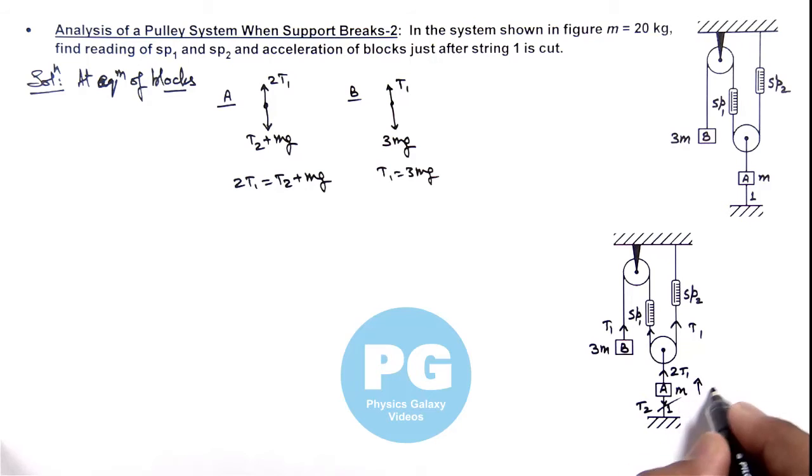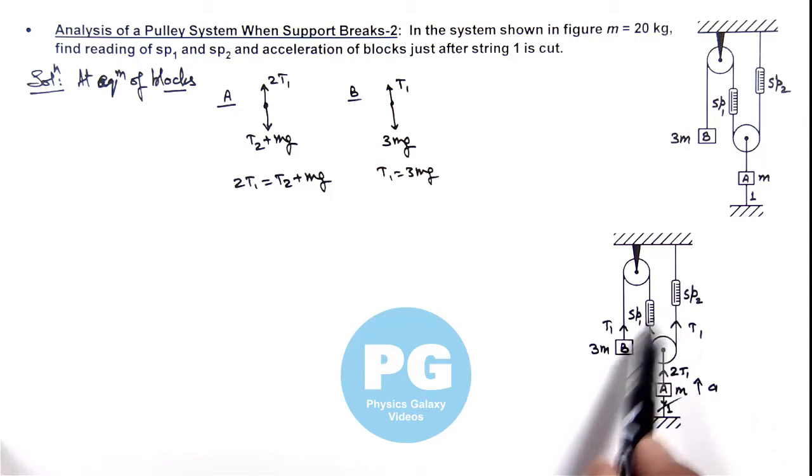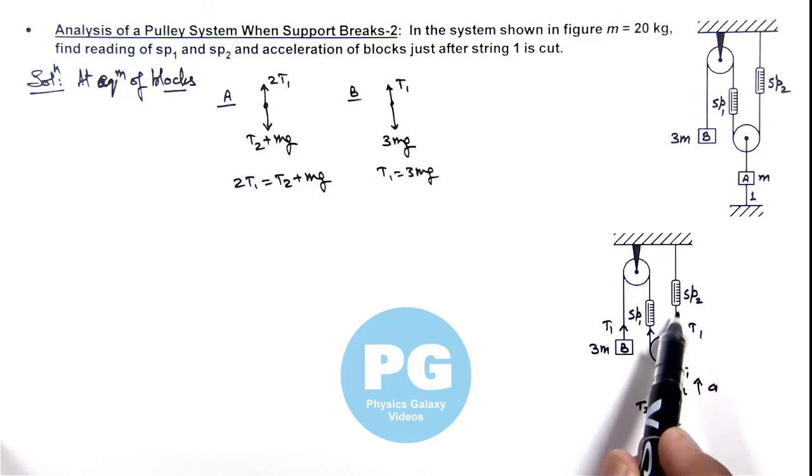With say acceleration A, then we can write its equation because this tension will suddenly won't change because this mass is having inertia, and just after this string is cut it starts moving with some initial acceleration.